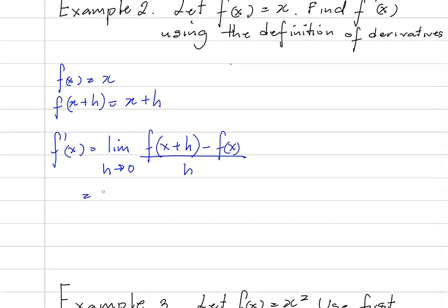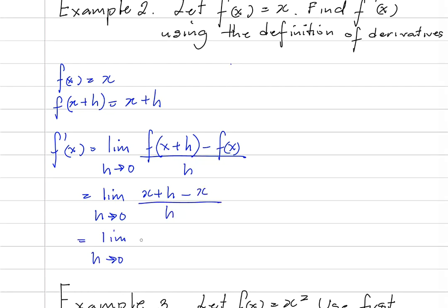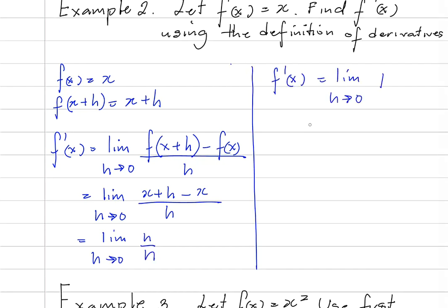So this is the same as saying the limit as h approaches 0 of x plus h minus x, all over h. So this would become the limit as h approaches 0 of h over h. And this would be f prime of x is equal to the limit as h approaches 0 of 1, which is equal to 1. So if f of x is equal to x, f prime of x would be equal to 1. So the first derivative of x is 1.